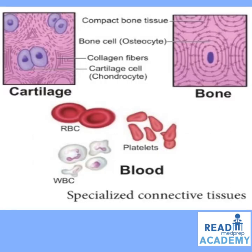A summary of specialized connective tissues: cartilage has cartilaginous fibers and lacunae containing chondrocytes; bone has lacunae with osteocytes and compact bone with lamellae around the Haversian canal; and the fluid connective tissue, blood, is made up of plasma, RBCs, platelets, and WBCs.